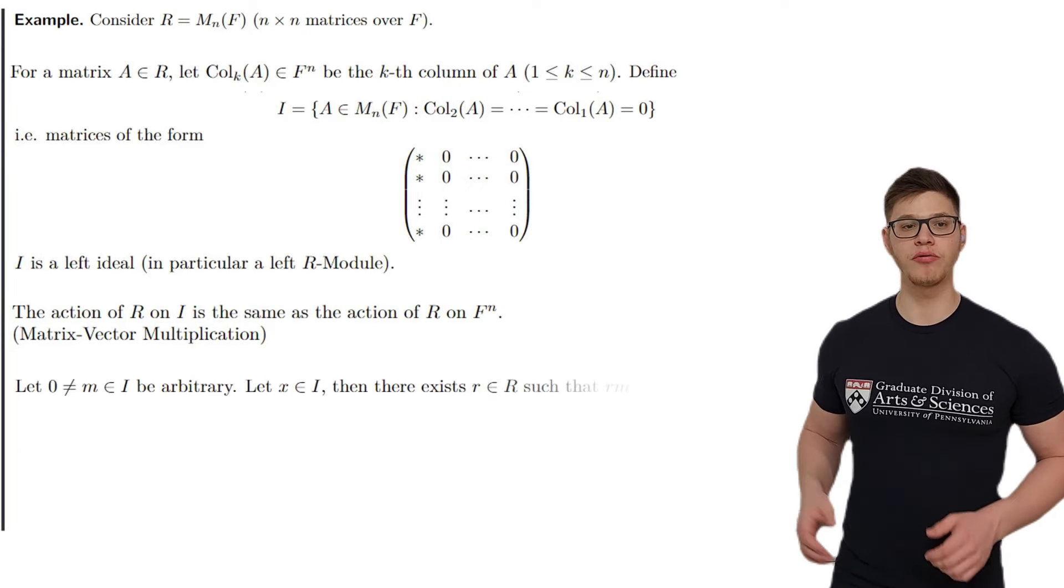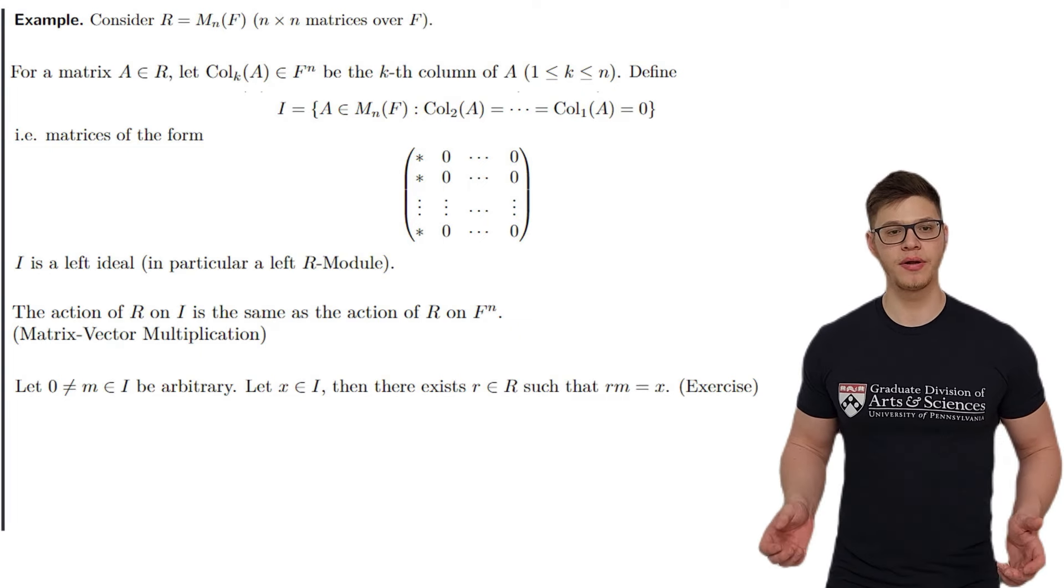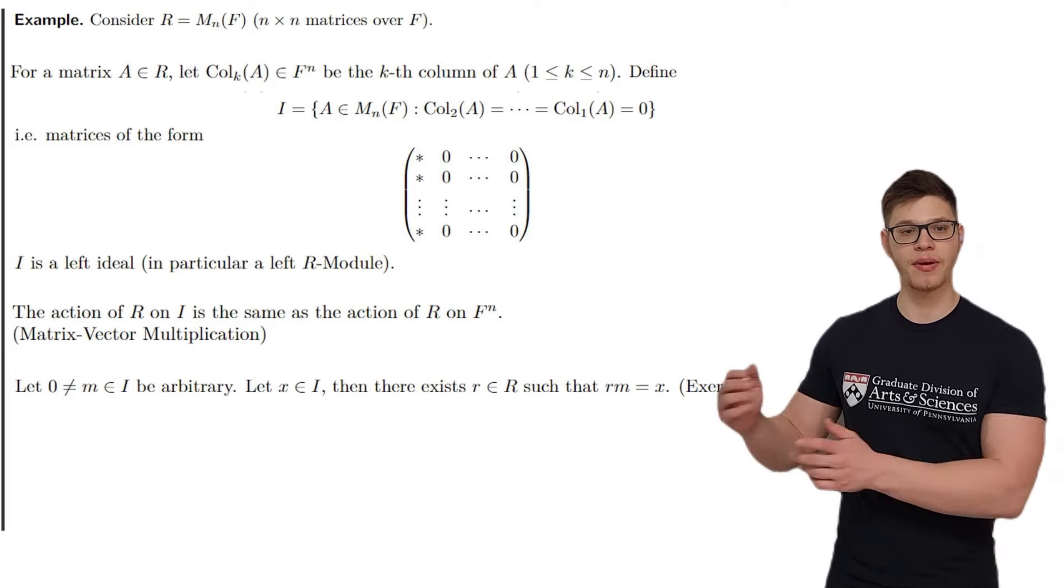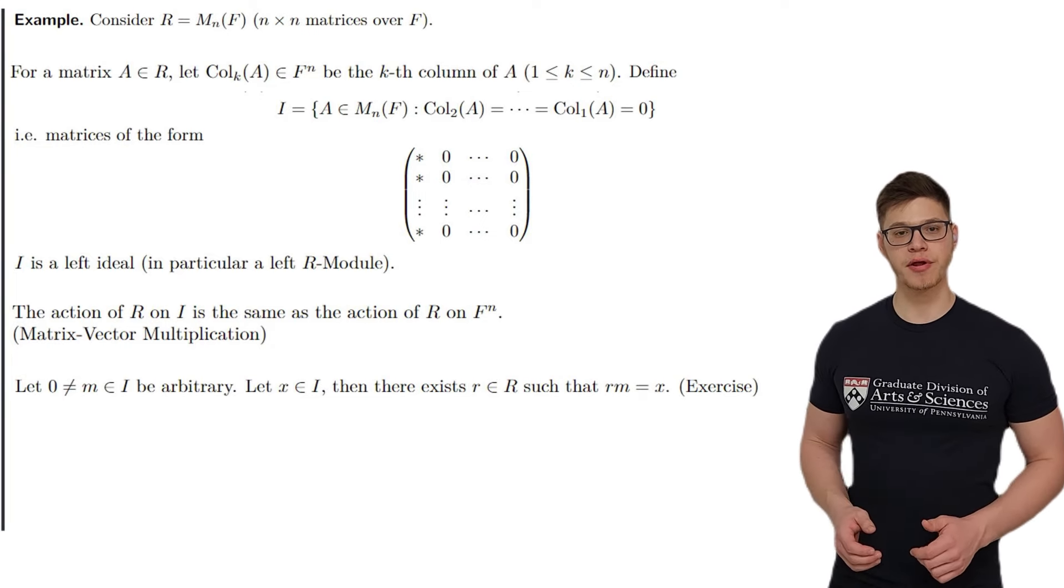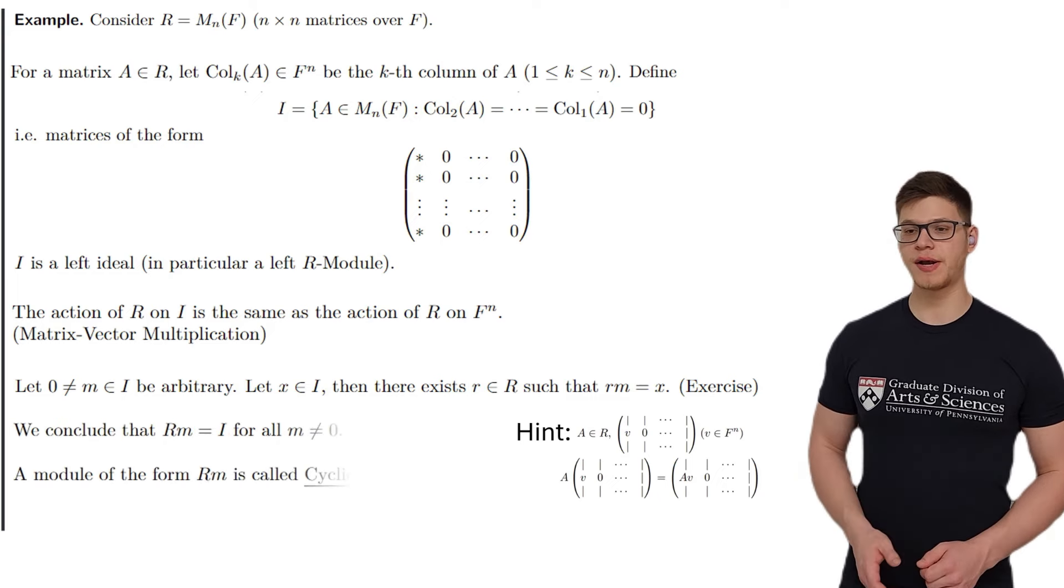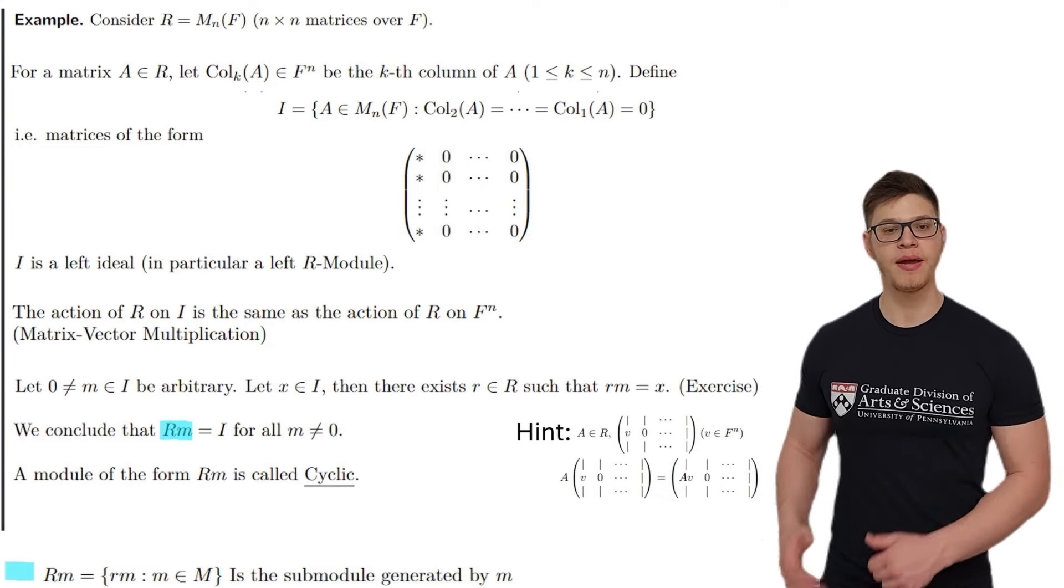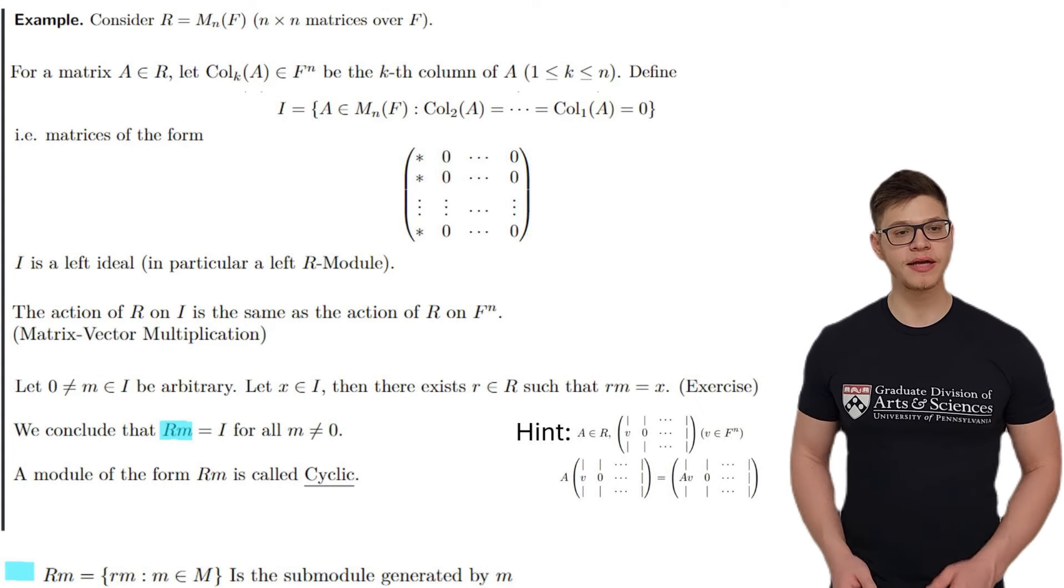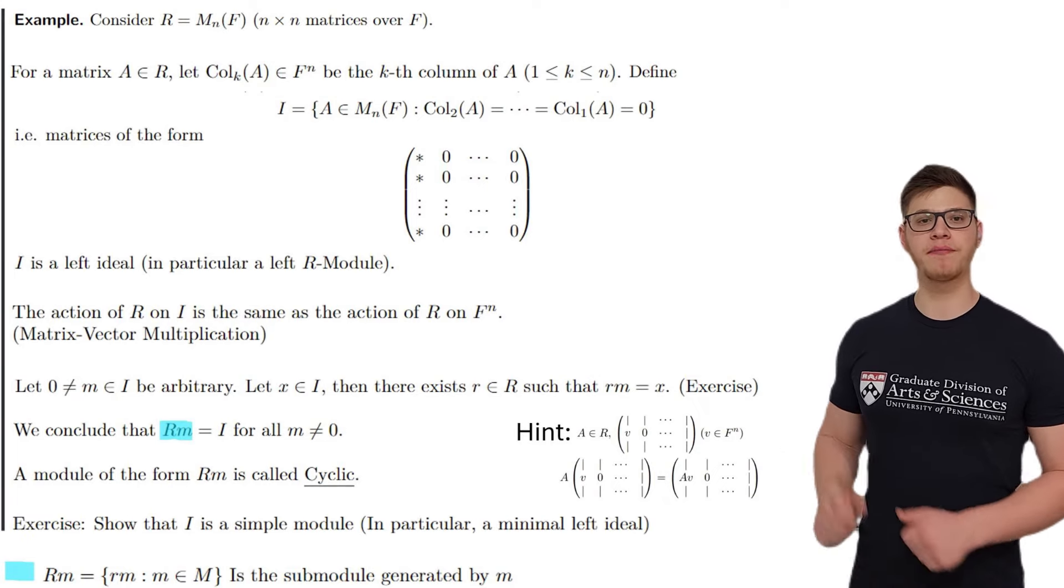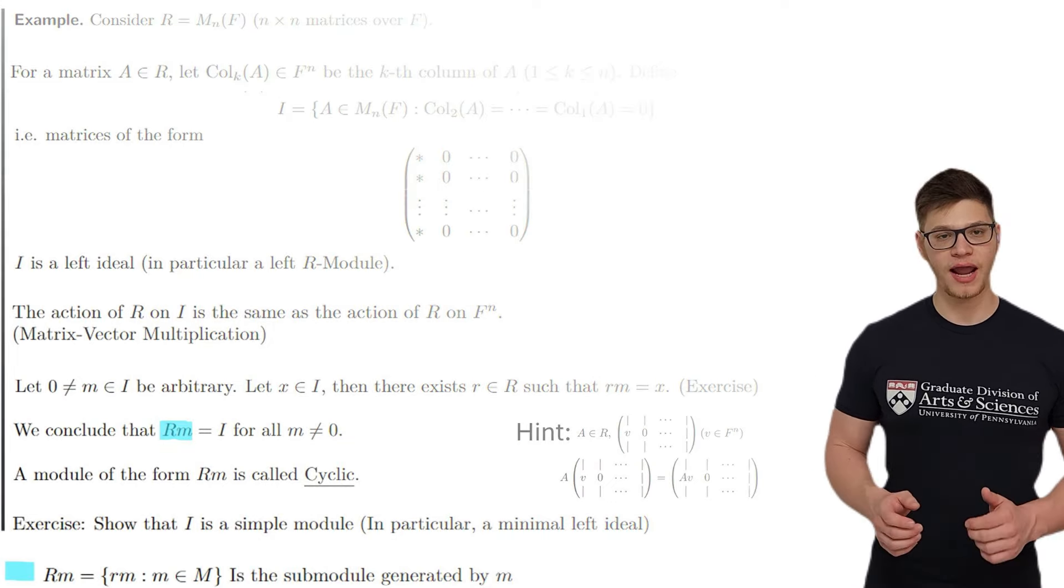Let m be any non-zero element of I, and let x be any other element of I, including zero. Then, one can show that there is some element r in our ring, such that r takes m to x. I leave both of these statements as exercises, with the following hint showing how to connect the two actions. We conclude that the sub-module generated by m, which we denote by Rm, is equal to the entire module I for a non-zero element m in I. We call such a module cyclic, and m a generator. As an exercise, you can show that I is a simple module. In particular, it is a minimal left ideal, because those definitions also coincide in the case of ideals.